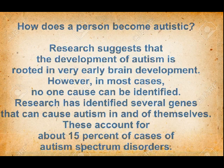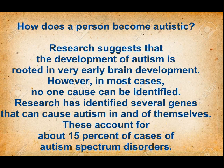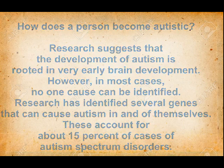How does a person become autistic? Research suggests that the development of autism is rooted in very early brain development. However, in most cases, no one cause can be identified. Research has identified several genes that can cause autism in and of themselves, accounting for about 15% of cases of autism spectrum disorders.